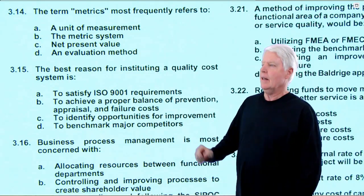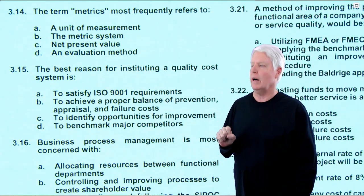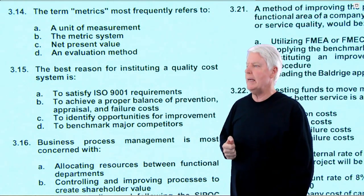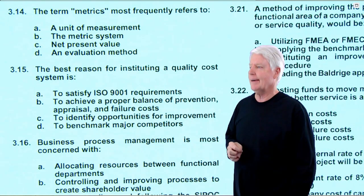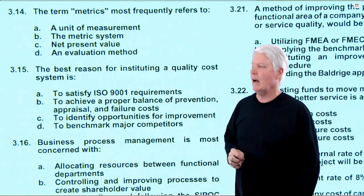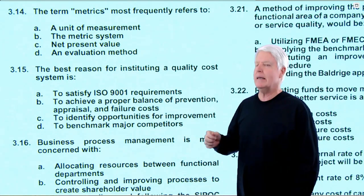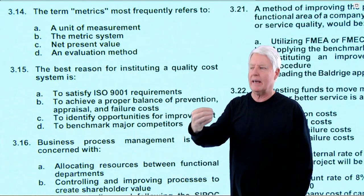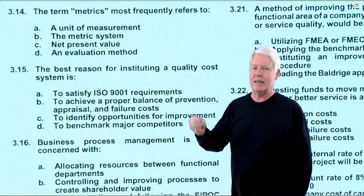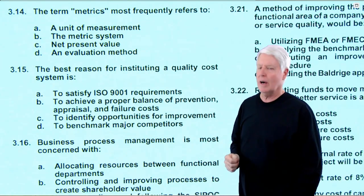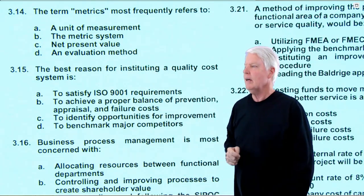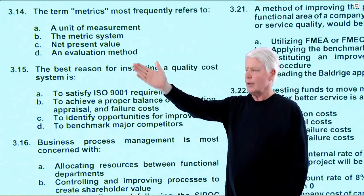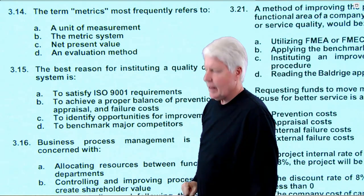Question 14: The term 'metrics' most frequently refers to what? Option A — a unit of measurement — is plausible. Option B — the metric system — no. Option C — net present value — no. Option D — an evaluation method — yes. You give people metrics to see if they can reach them: meeting them is good, exceeding them is great, not meeting them is poor. Metrics is an evaluation method. Answer D is correct, and it is.